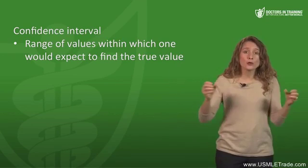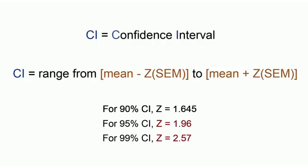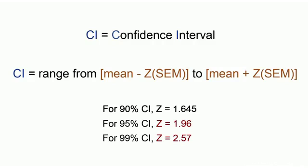The equation for confidence interval is: CI equals the mean minus Z times the standard error of the mean, to the mean plus Z times the standard error of the mean. Z is a constant specific to the confidence interval you're calculating. For a 90% CI, use Z = 1.645. For a 95% CI, use Z = 1.96, which you can round up to 2. For a 99% CI, use Z = 2.57. As confidence level increases from 90% to 95% to 99%, Z increases and the confidence interval becomes broader.